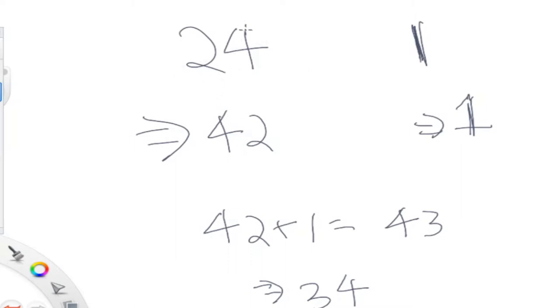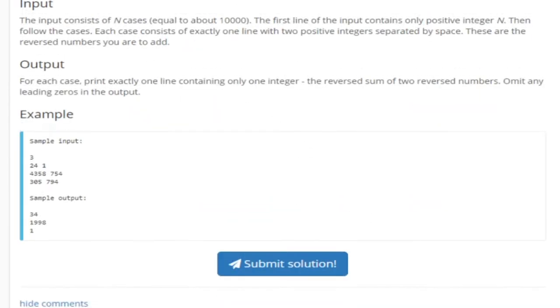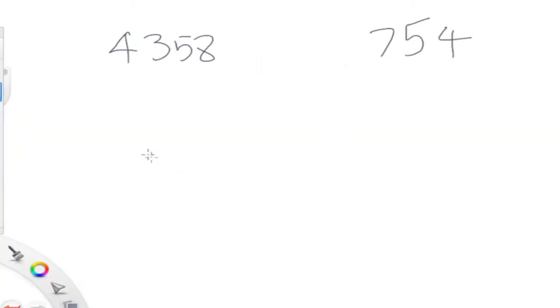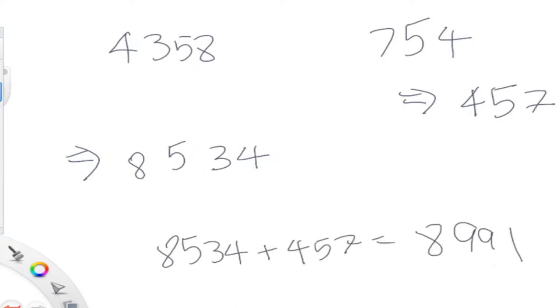When we say reverse, we mean swap the digits to the end. Let's go over another test case. The other test case is 4358 and 754. If you were to reverse 4358, you get 8534. And if you were to reverse 754, you get 457. Now if you were to add them up — 8534 plus 457 — and then reverse the result, you get 1998.